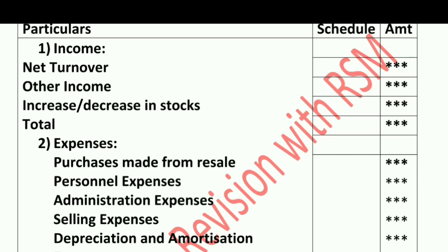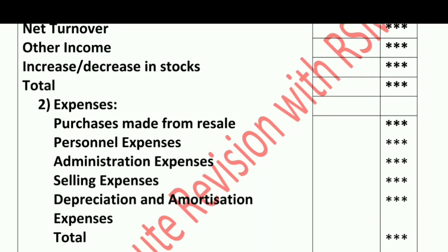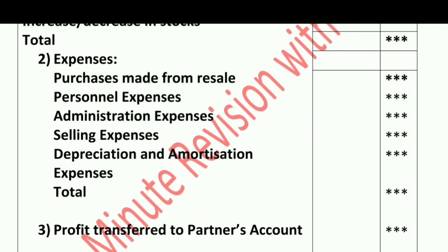Further, we will divide our expenses. Expenses have two to four exam-oriented points, divided into many heads. First, you have to write Purchases — any purchase-related points such as purchases, purchase returns, carriage inward, all go here. Next is Personal Expenses, which includes salaries, wages, productive wages, unproductive wages, and any remuneration-related points.